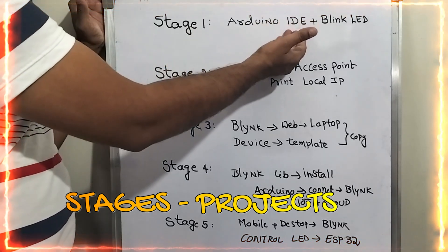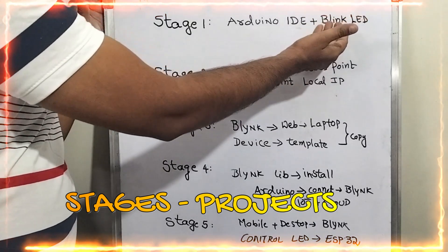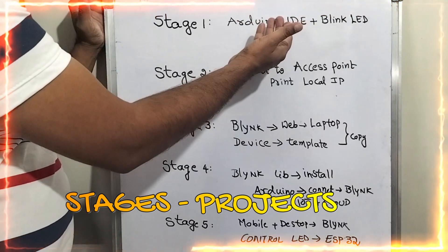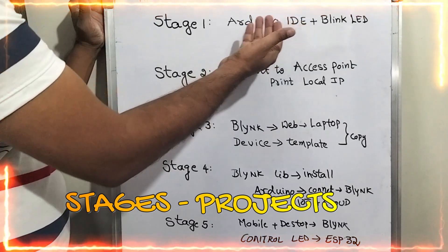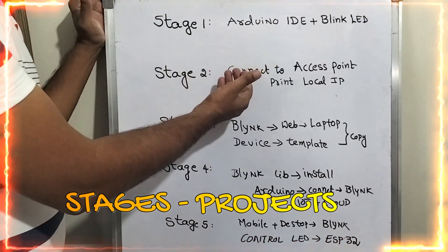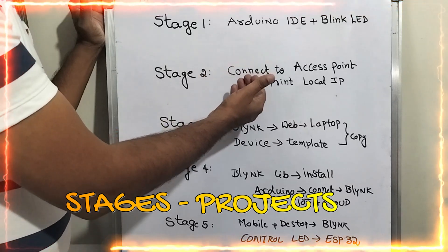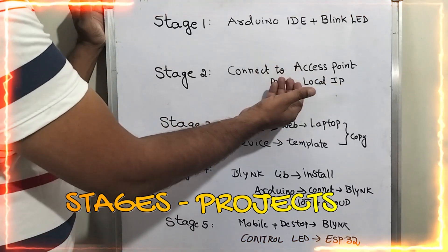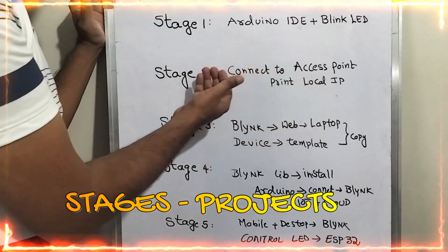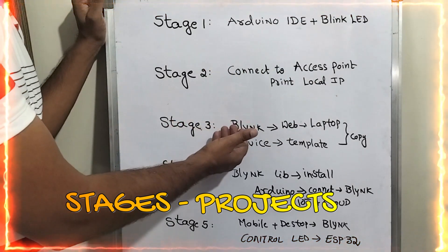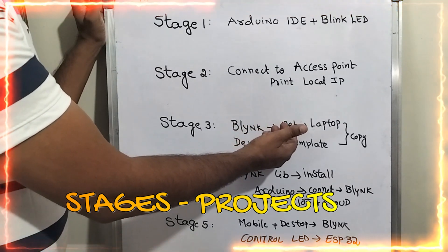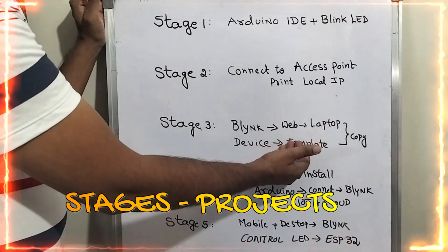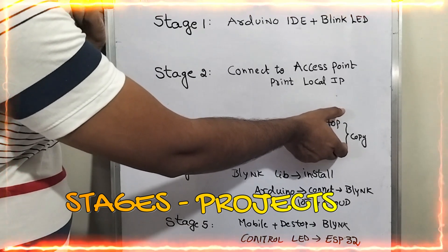In order to complete this project, these stages are very important. Stage one is Arduino IDE and blinking an LED using ESP32 — we need to install the required libraries for the ESP32 board. Stage two: connect to the access point and print the local IP, using the Wi-Fi module of ESP32 with the required libraries. Stage three: set up Blynk on the web — on the laptop we need to create a template and a device and copy certain credentials.